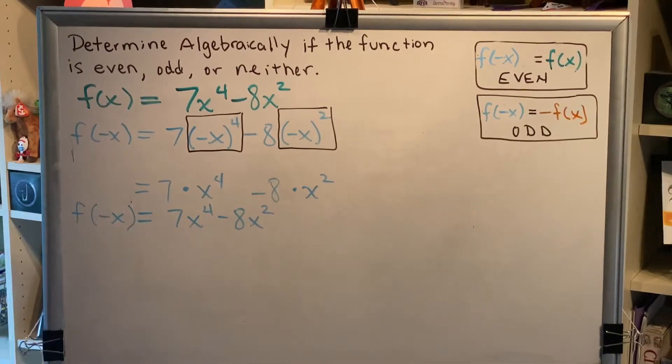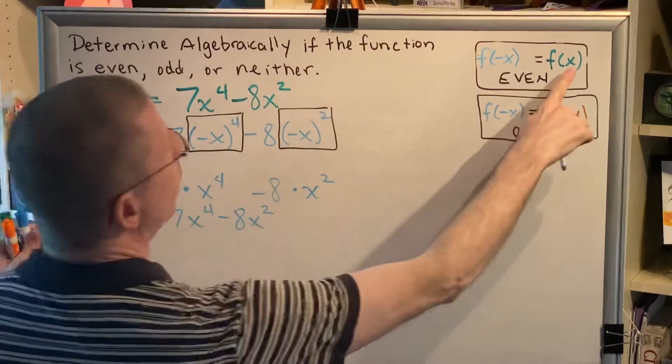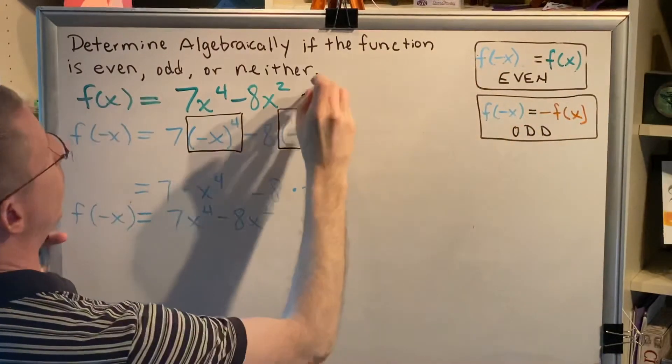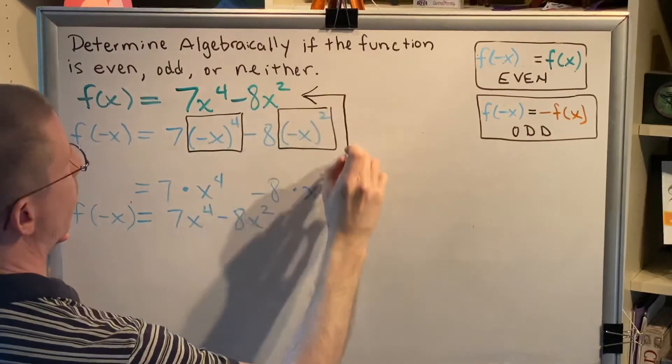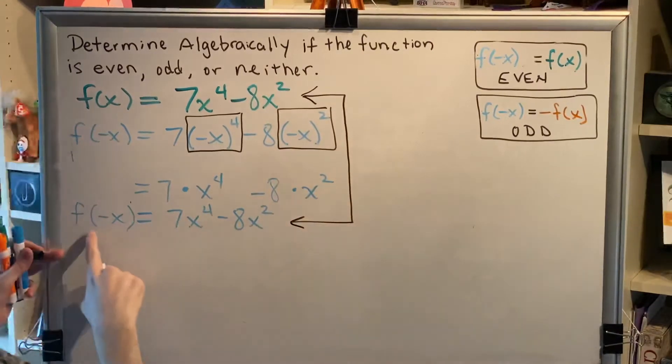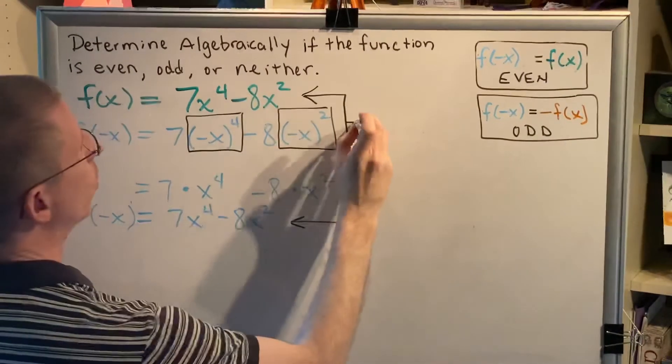Okay, we are ready to make our comparison. So, is the green equal to the light blue? Is f of x, which is given in the problem, equal to f of negative x, which we just solved?